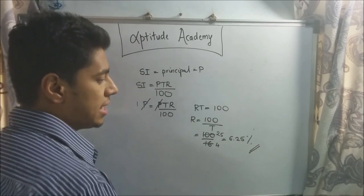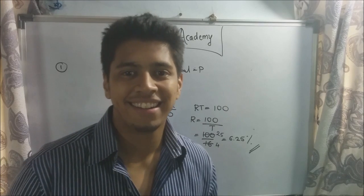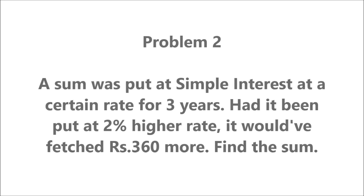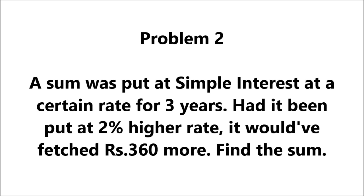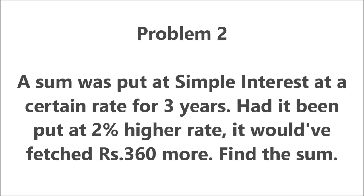So after 16 years, if the rate of interest is 6.25%, then your money will double. Easy, right? Let's go on to problem number two. Problem two: A sum was put at simple interest at a certain rate for three years. Had it been put at 2% higher rate, it would have fetched rupees 360 more. Find the sum.